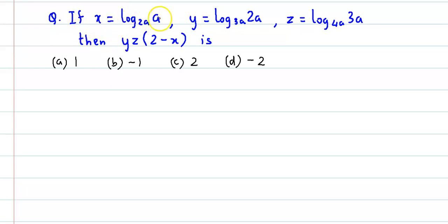If x is equal to log a to the base 2a, y is equal to log of 2a to the base 3a, and z is equal to log of 3a to the base 4a, then yz times 2 minus x is...